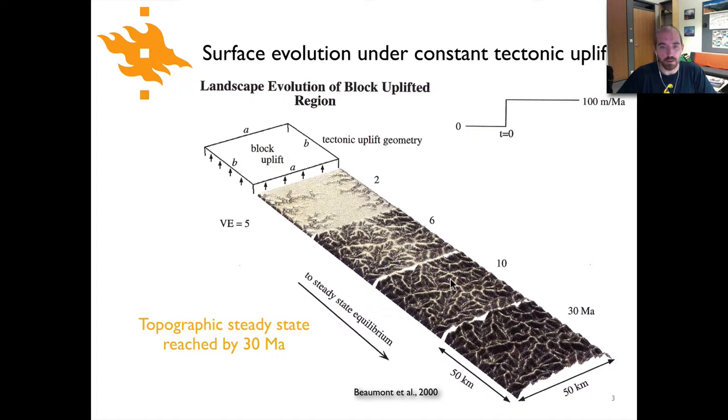By 10 million years it looks like we've got a well-established river network system with ridges separating the different river valleys. By 30 million years in this particular scenario we've basically reached a topographic steady state where there's a balance between the uplift, the flux of uplift into the base or the upward velocity of the block, and erosion at the surface.